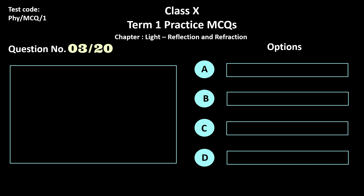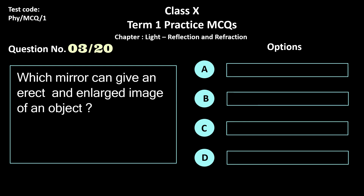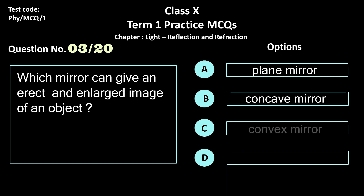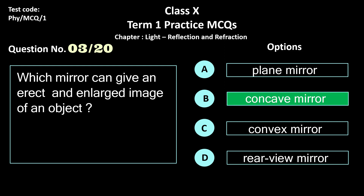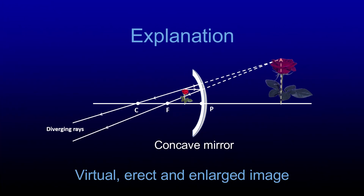Question 3. Which mirror can give an erect and enlarged image of an object? Options: a) plane mirror, b) concave mirror, c) convex mirror, and d) rear view mirror. The correct answer is option b, concave mirror. Out of these, an enlarged image is only formed by a concave mirror.